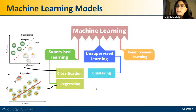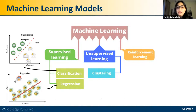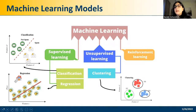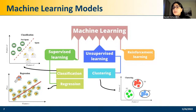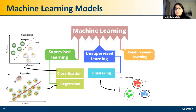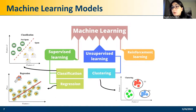In unsupervised learning, the main class is clustering, where we don't have any labels. One application of clustering is in grouping customers. We have different characteristics of customers and using clustering, we can put them in different clusters — showing that customers with similar characteristics are close to each other and may belong to one cluster.